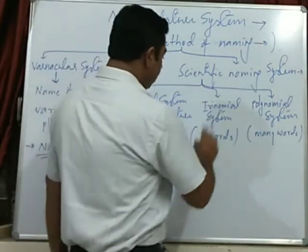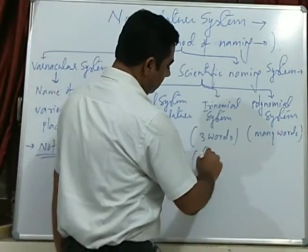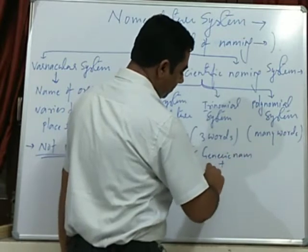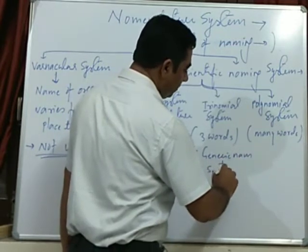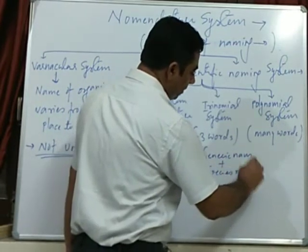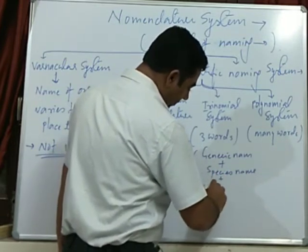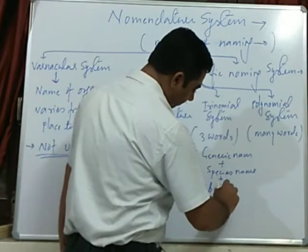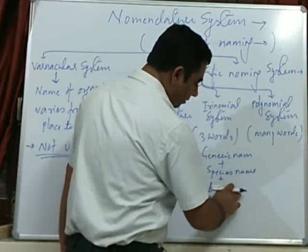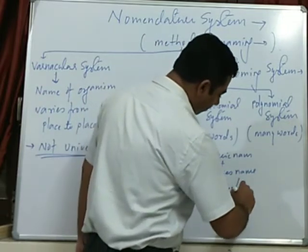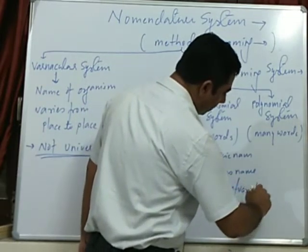Trinomial has three words: generic name, specific name or species name, and third one is either subspecies or variety name.